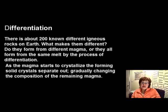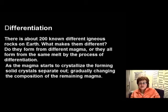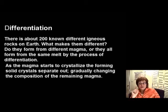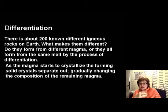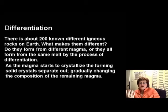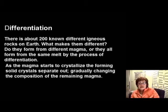So here we are at differentiation. If you look at all the igneous rocks on Earth, there are about 200 different kinds — and you only have to know 11, so don't complain. Many people, including myself, have wondered: how come we have so many different kinds of igneous rocks? What makes the difference among them? The question is: are they all forming from the same magma by differentiation, or do we possibly have different magmas?